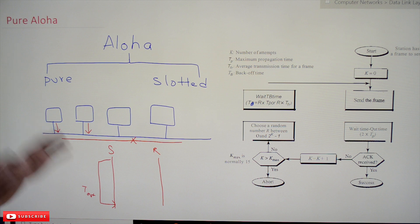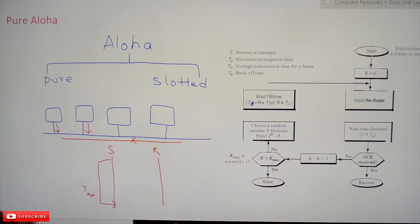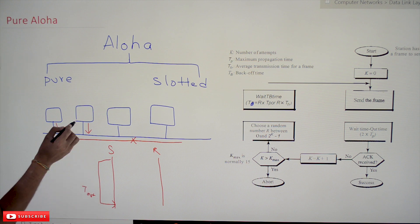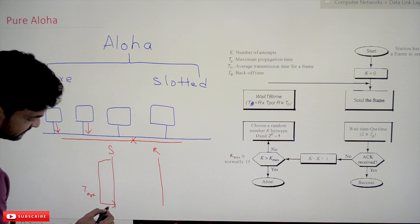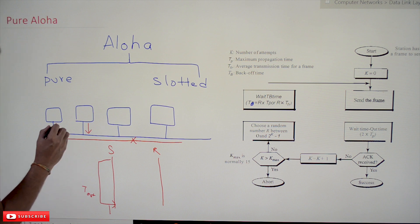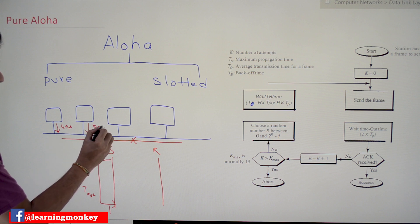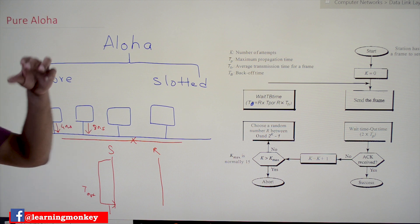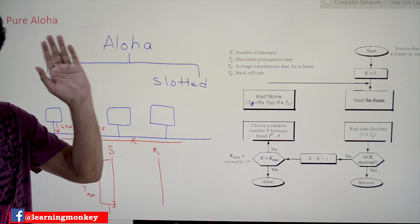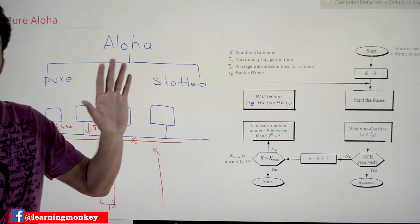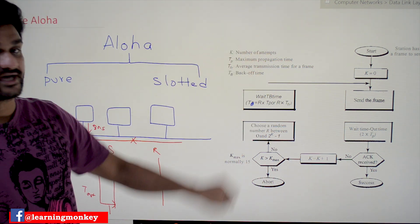The efficiency of the network will get reduced. So how can this collision be addressed in Pure Aloha? After the timeout, both systems will wait for a random period of time. For example, if this system has decided to wait for 4 nanoseconds and this system has decided to wait for 8 nanoseconds, there will be a chance for both of them to transmit the packets successfully. We will try to understand how the protocol works clearly with this diagram.